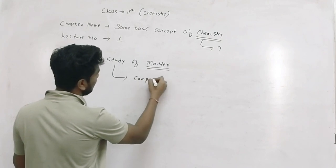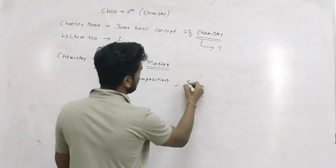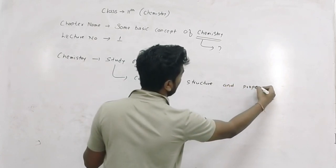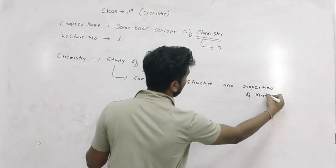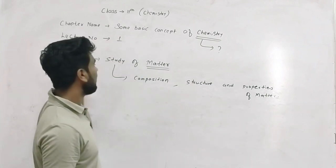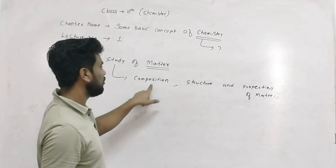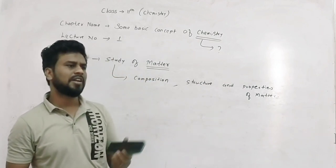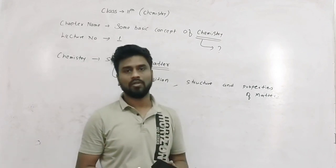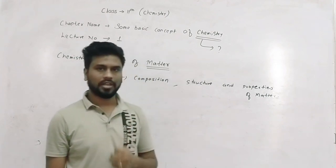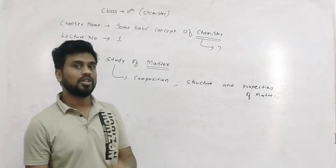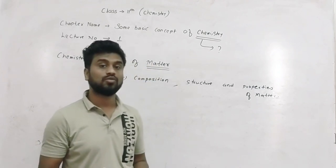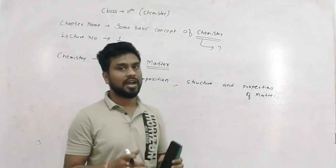In chemistry we study the composition, structure, and properties of matter. Composition means what the matter is made of. For example, let's talk about water. What kind of matter is water? Water is hydrogen and oxygen from chemical composition. Water is H2O — a compound of the elements hydrogen and oxygen.